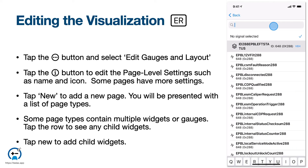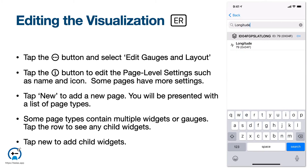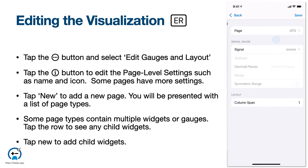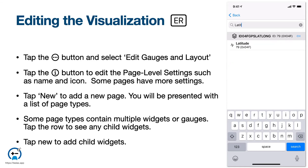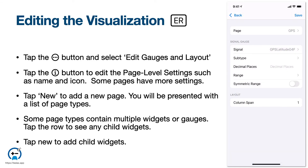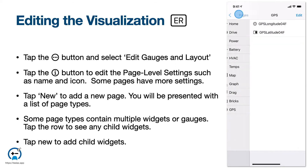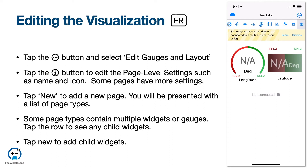The gauge settings will appear where you can configure the signal and any additional options. In this case, we are adding Longitude and Latitude by searching the signal list and selecting the desired signal. You can also configure additional options like the type of gauge. Returning to the main screen and selecting this new page, you will see the new gauges appear. Notice also the yellow bar that reminds you that you have chosen signals that are on a second bus, and thus will require a multi-bus data source in order to update.